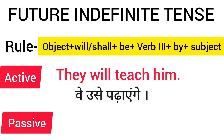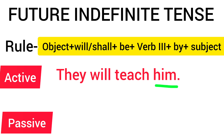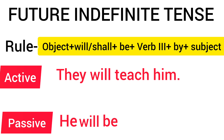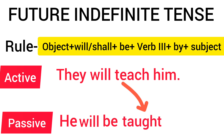Next sentence is: 'They will teach him.' (वे उसे पढ़ाएंगे.) So our object is 'him'. The subject form of 'him' is 'he'. First we write the object — 'him' becomes 'he'. We write 'he', then 'will' goes with 'he' — 'he will' — then we add 'be', and teach's third form is 'taught'. So: 'He will be taught.' Then 'by', and the subject was 'they', so the object becomes 'them'. Full sentence: 'He will be taught by them.'